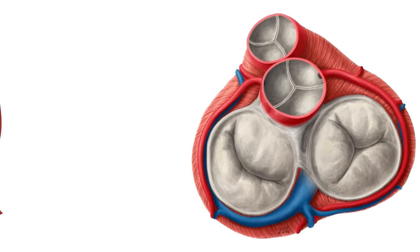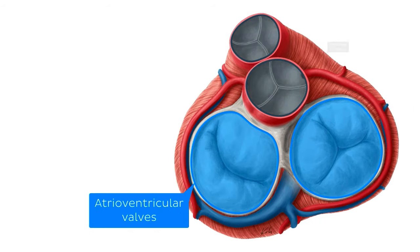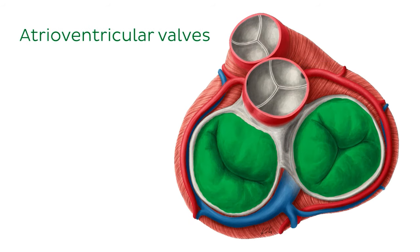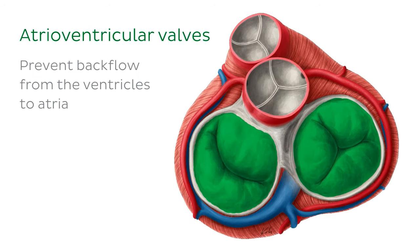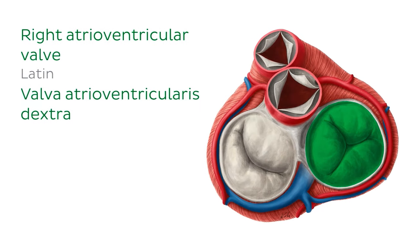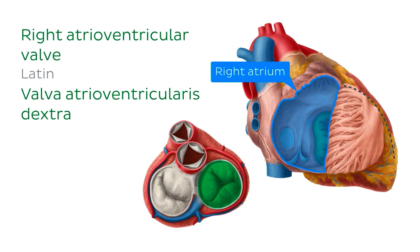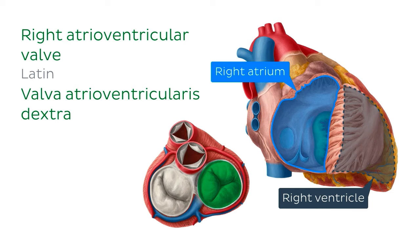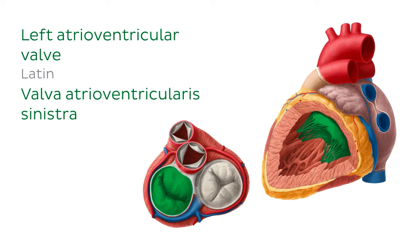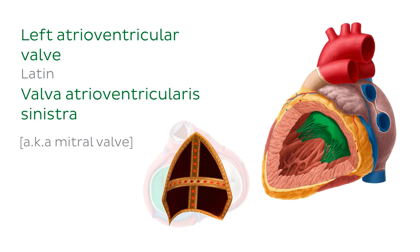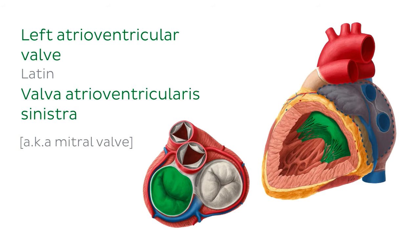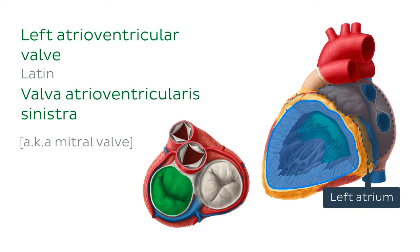There are two sets of valves: atrioventricular and semilunar. The atrioventricular valves prevent backflow from the ventricles to the atria. The right atrioventricular, or tricuspid valve, is between the right atrium and right ventricle — it gets the name tricuspid because it has three cusps or leaflets. The left atrioventricular, or bicuspid valve, is also called the mitral valve, since it only has two cusps and resembles a mitre in shape. It lies between the left atrium and the left ventricle.